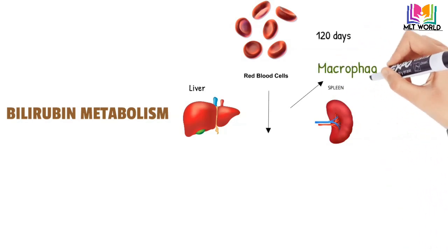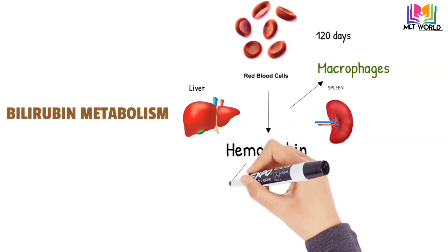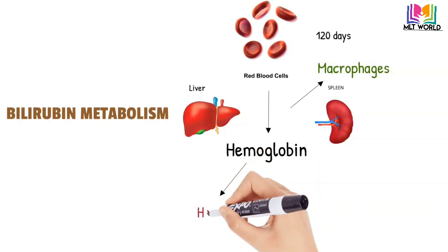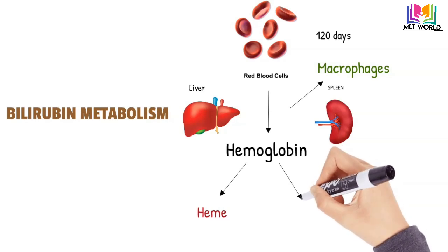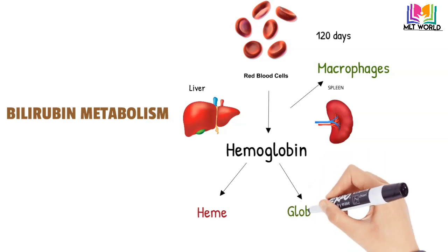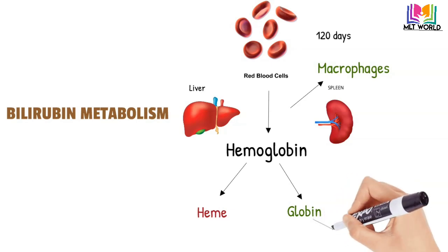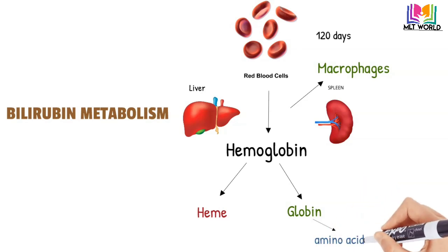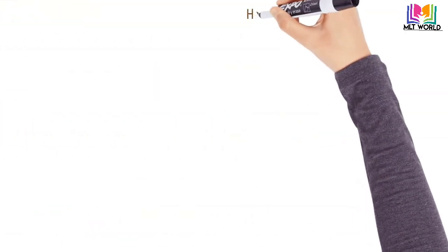When red blood cells are destroyed, hemoglobin will be released. Hemoglobin, as we know, is present in the red blood cells. Hemoglobin then divides into the heme part and the globin part. Globin is further converted into amino acids, and those amino acids will be utilized by the body. The heme part is the important part that is involved in bilirubin metabolism.